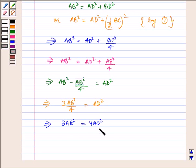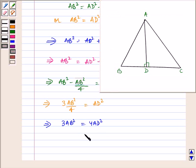That is, we have proved 3 times the square of one side, that is AB is the side of an equilateral triangle, is equal to 4 times the square of one of its altitudes. And here AD is the altitude of triangle ABC. So, hence proved.